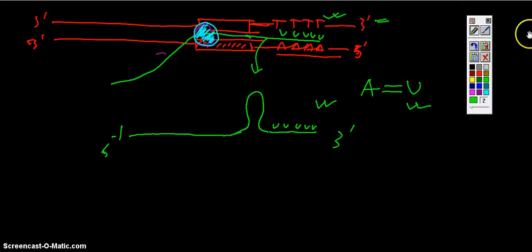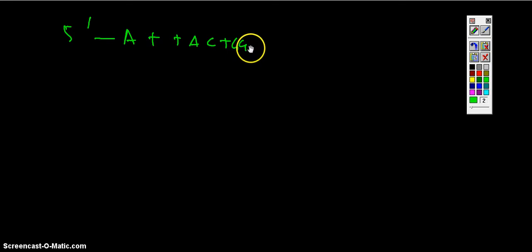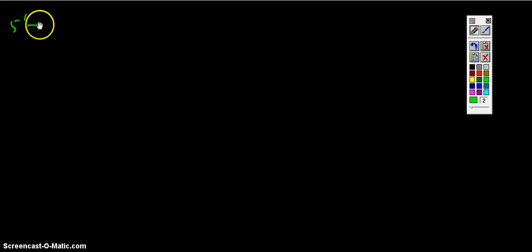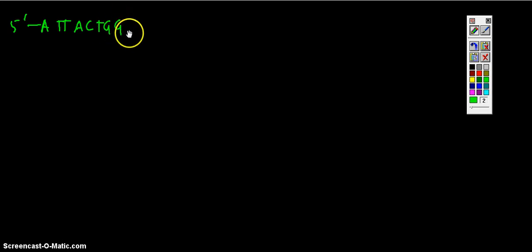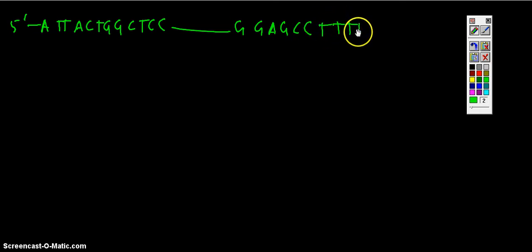The sequence on the DNA is, starting from the 5 prime end: A, T, T, A, C, T, G, G, C — then a gap — then G, G, G, A, G, C, C — followed by a long T, T, T, T stretch at the 3 prime end. The complementary strand reads: T, A, A, T, G, A, C, C, G — gap — C, C, C, T, C, G, G — followed by A, A, A, A. This palindromic sequence on the DNA demonstrates the inverted repeat that will form the stem-loop in the mRNA.